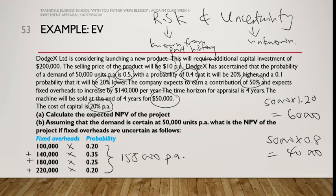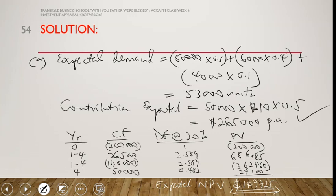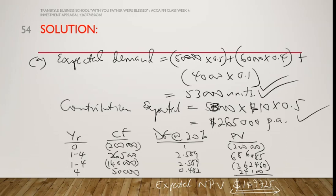The expected fixed costs come to $158,000 per annum, and we will use this figure. Now for the contribution: initially it was based on the expected demand of 53,000 units, but now that demand is certain at 50,000 units, we recalculate the contribution using 50,000 units.